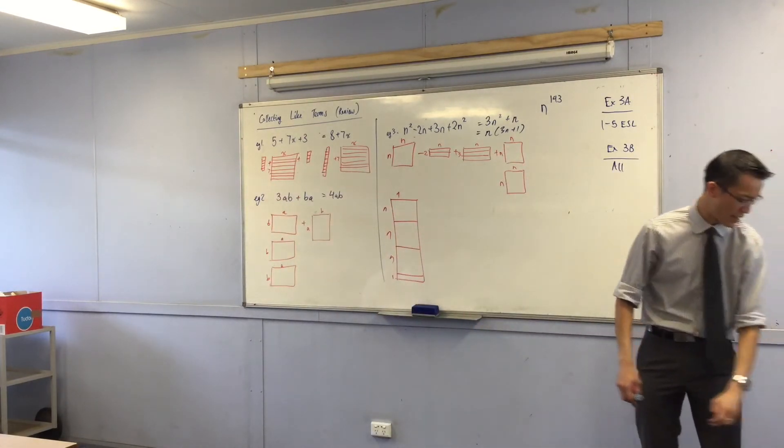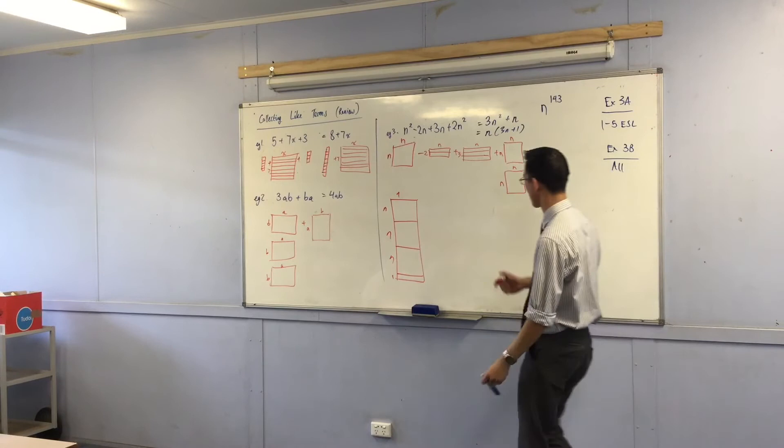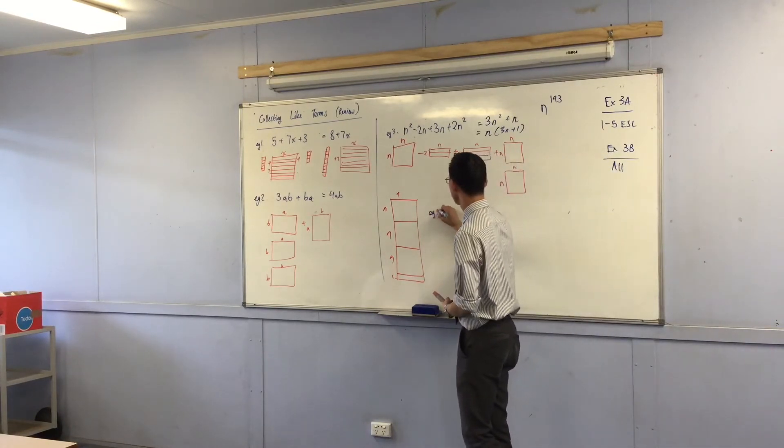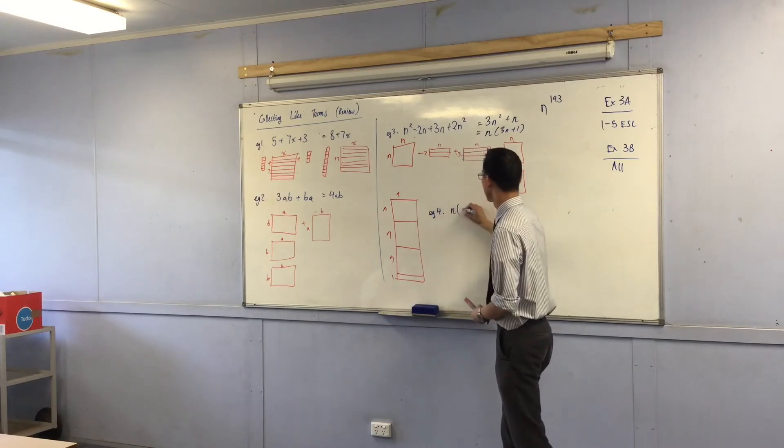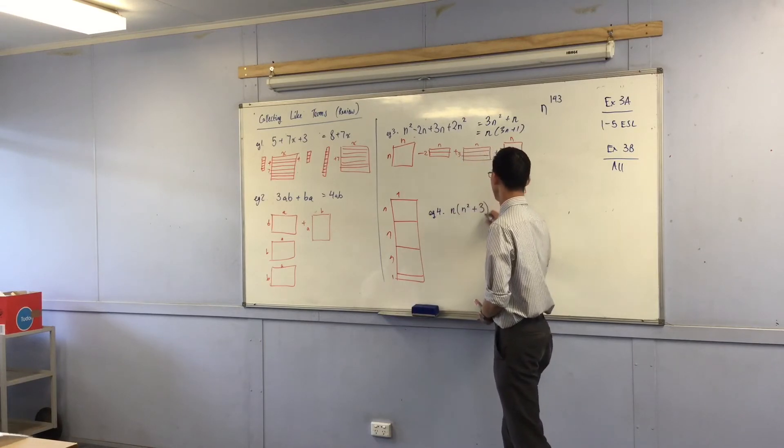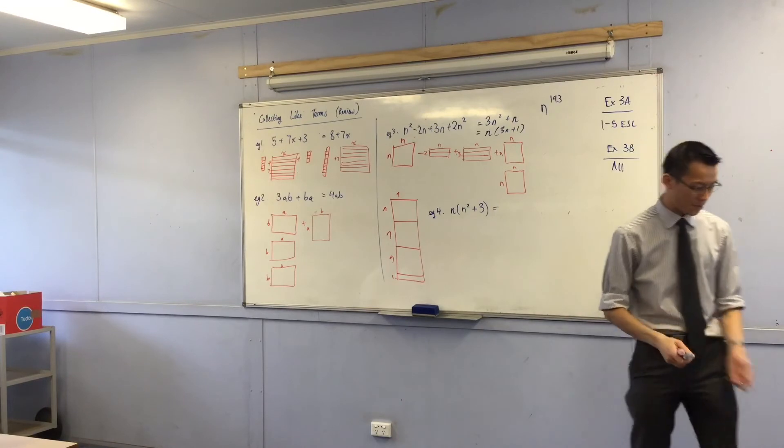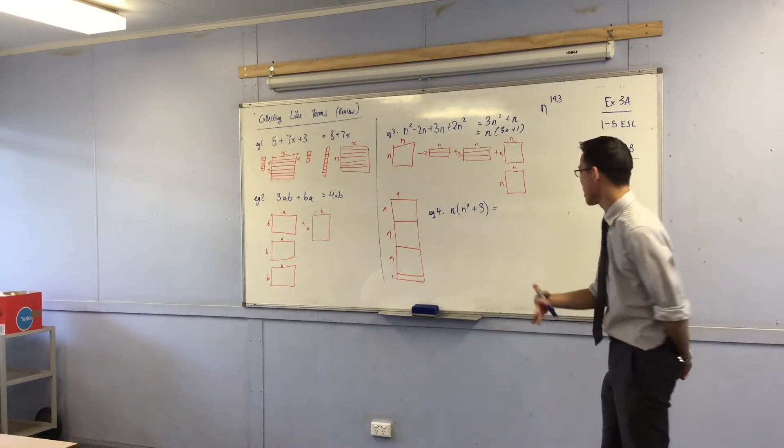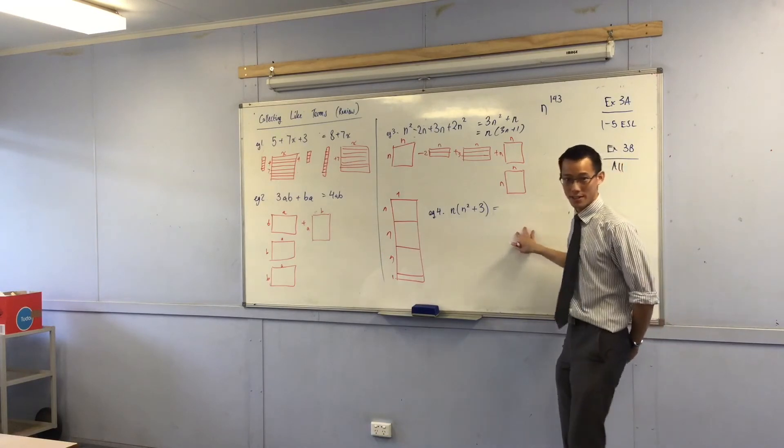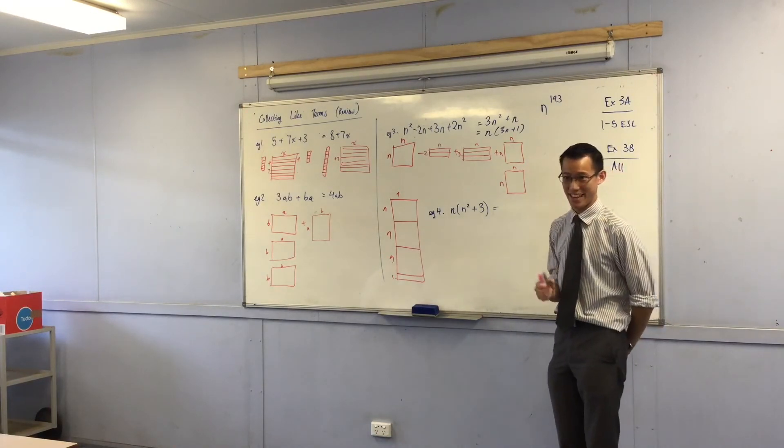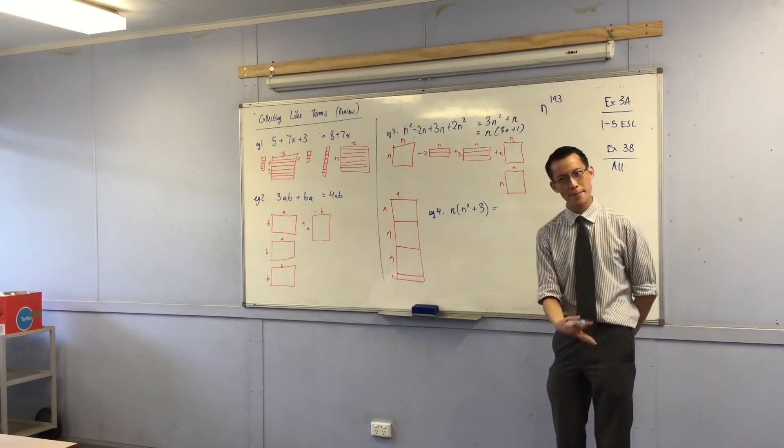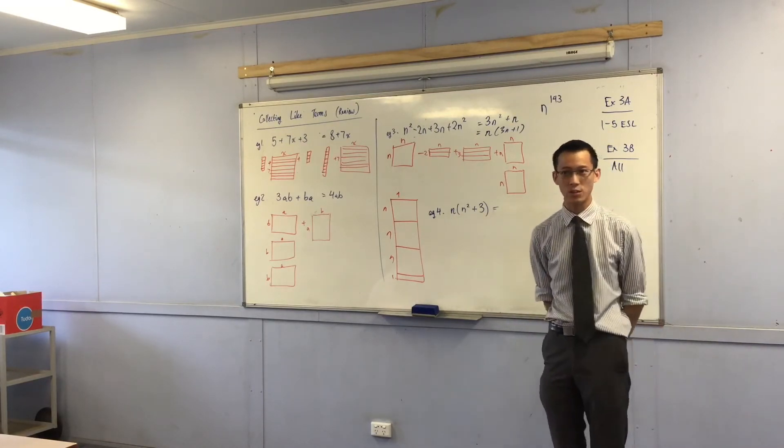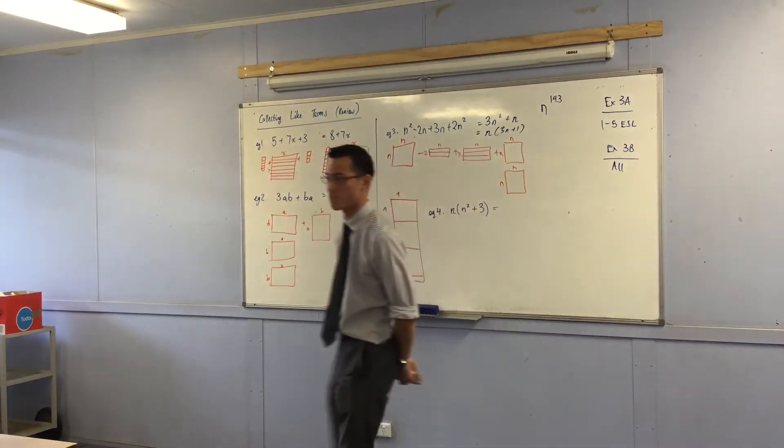I'm going to do one more example for you. We'll do one more because I'm running out of space. Example four. Now again, I'm trying to make you think before you leap to an answer. We'll leap to the answer in a second, but we should think about what it means. This I'm contending I can draw with squares and rectangles. How am I going to do it?